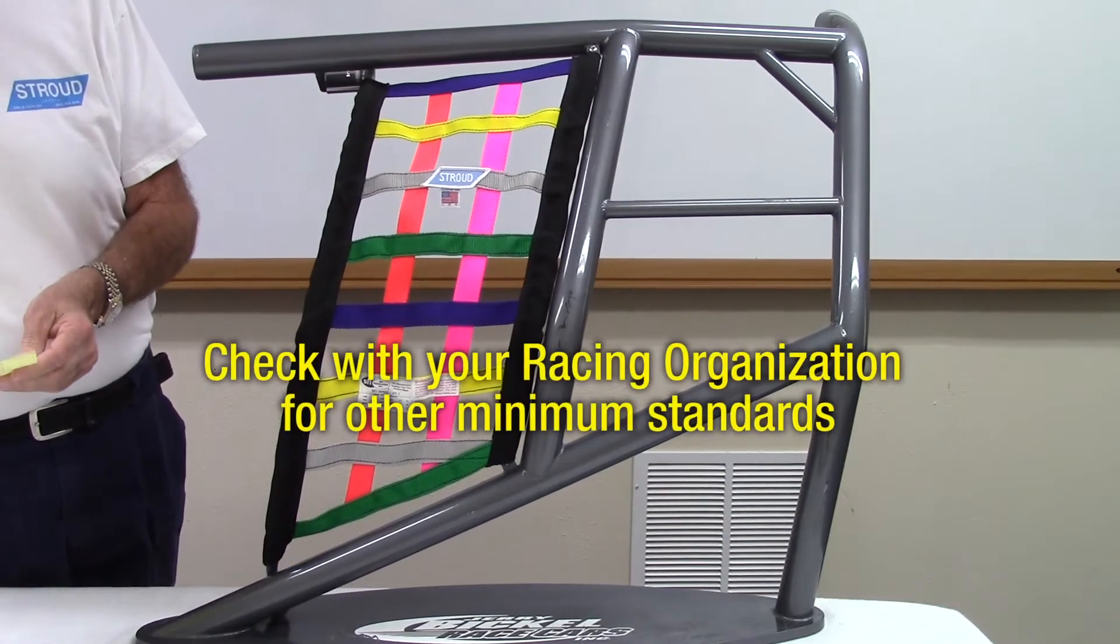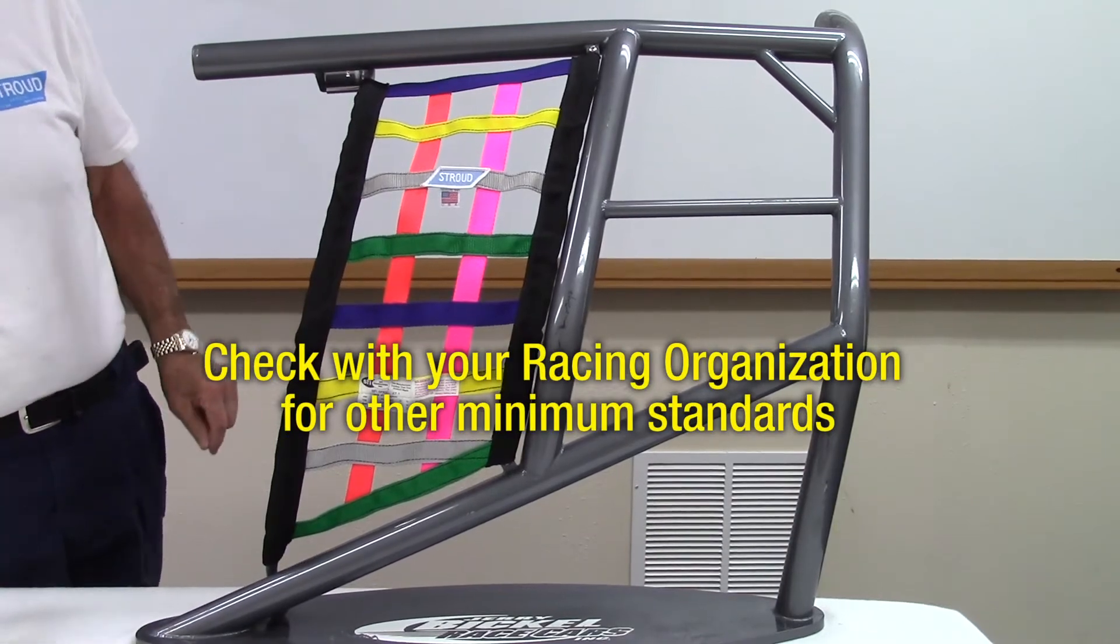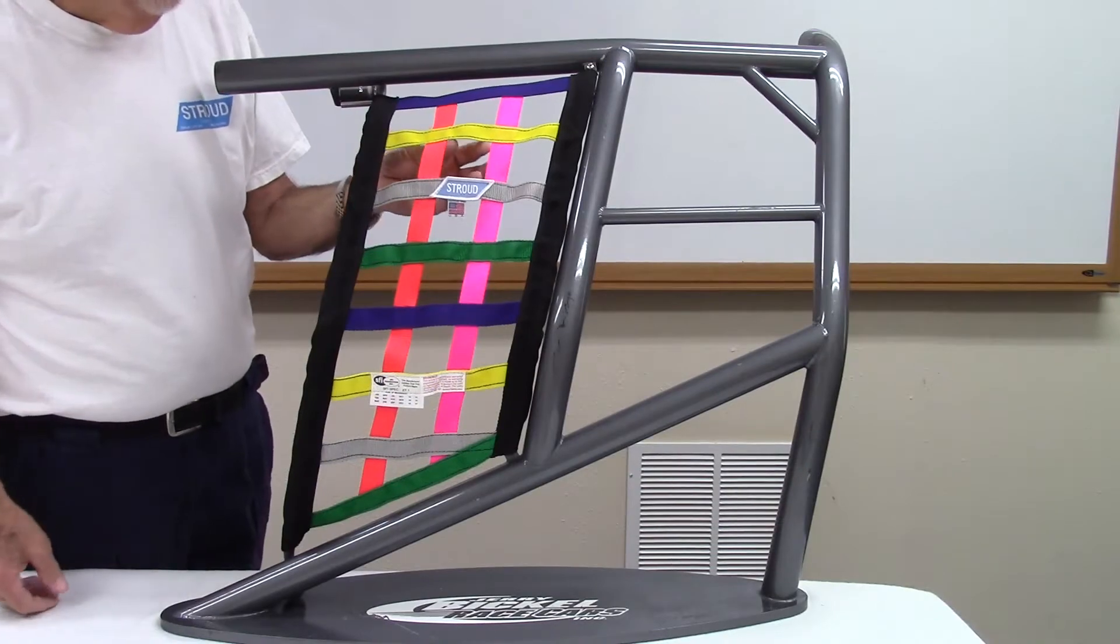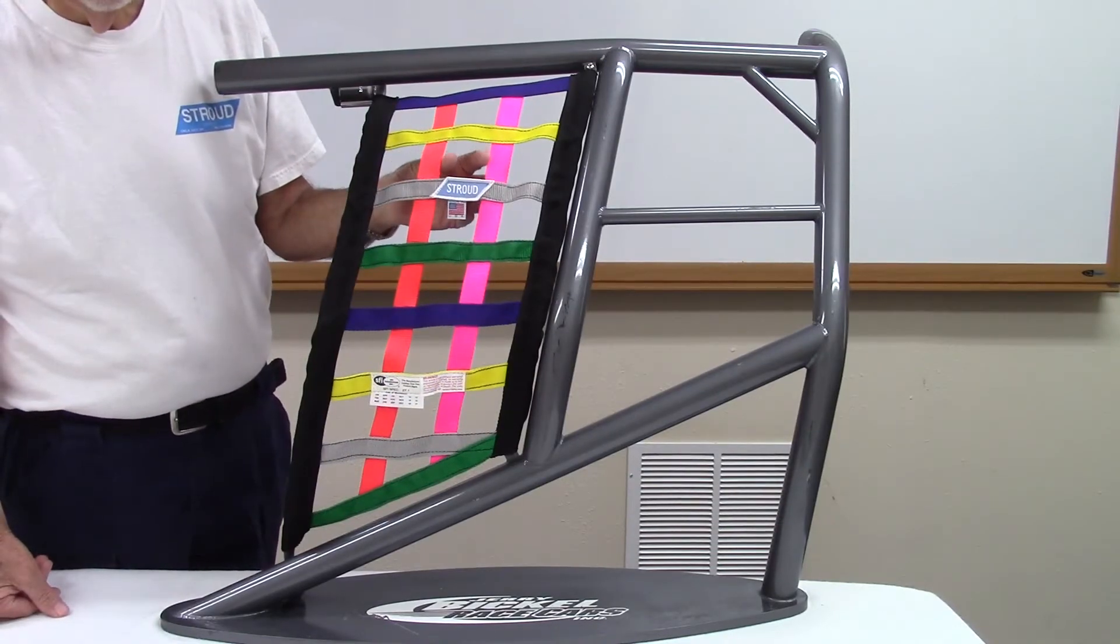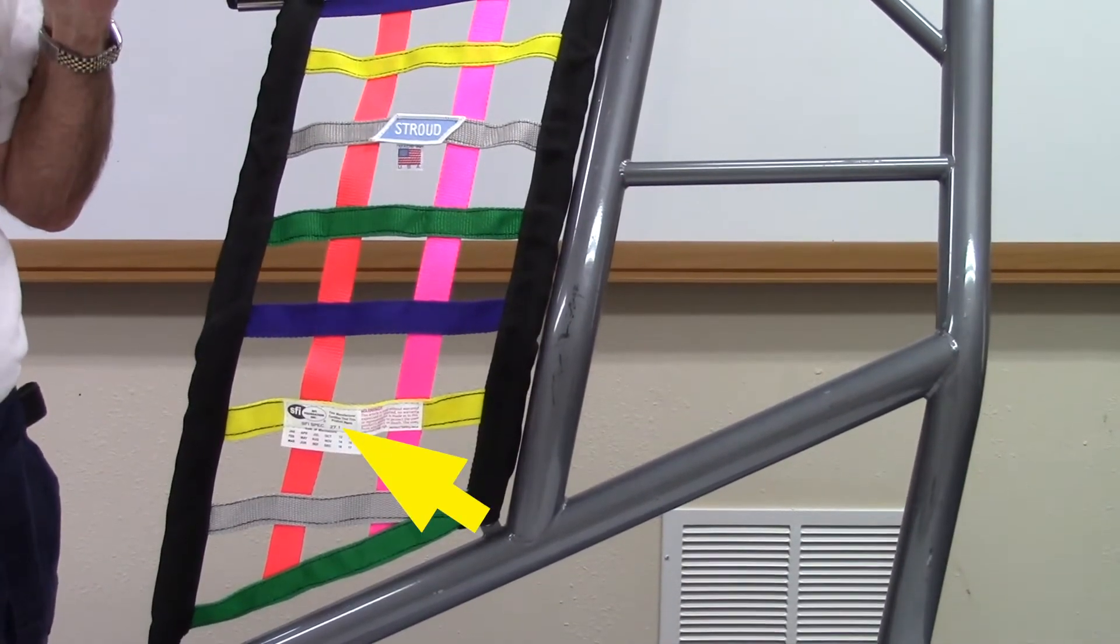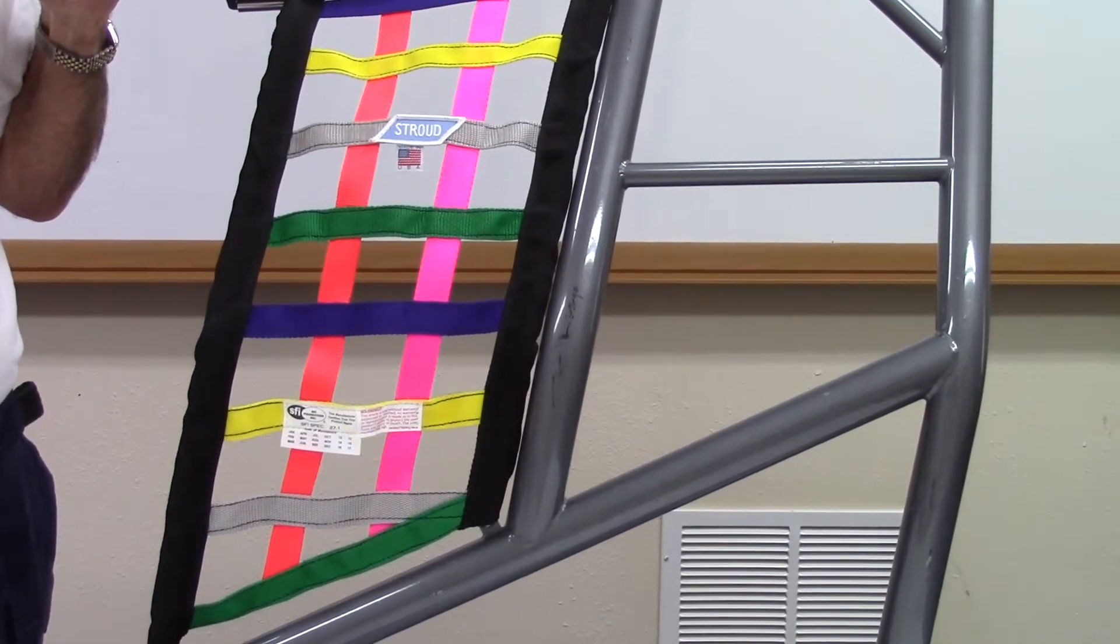Many racing organizations may also have their own minimum standards that must be complied with. The openings in the webbing are a maximum of 2 inches. SFI certification and other labels are attached to the outward side of the net for easy inspection.